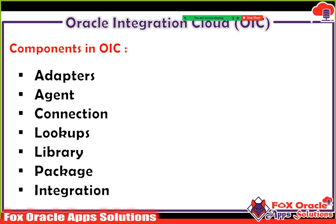When talking about OIC development, there are some basic components we need to know before getting started. There are seven basic components in OIC: Adapters, Agent, Connections, Lookups, Library, Package, and Integration — and Integration is the most important part in OIC.